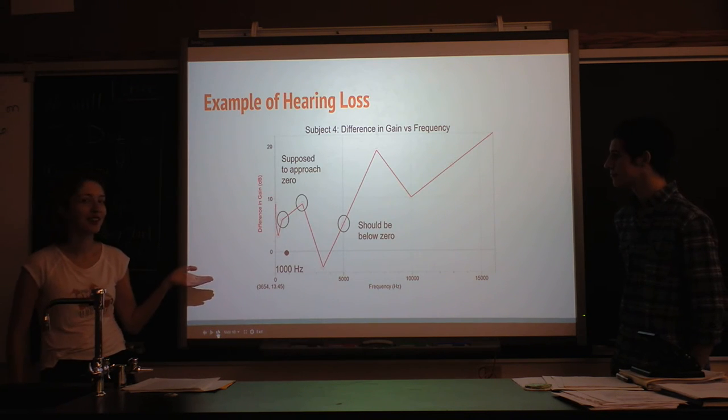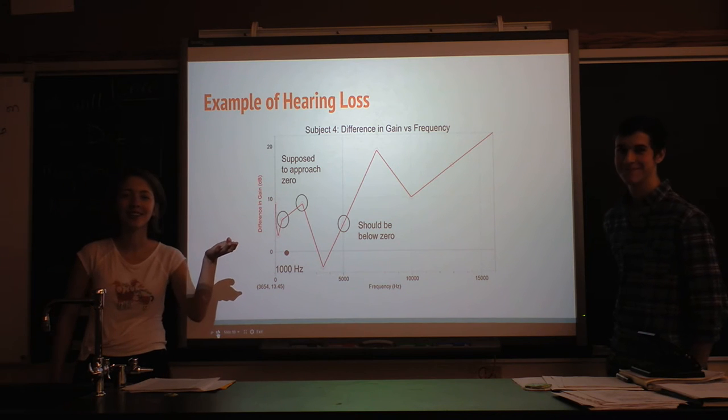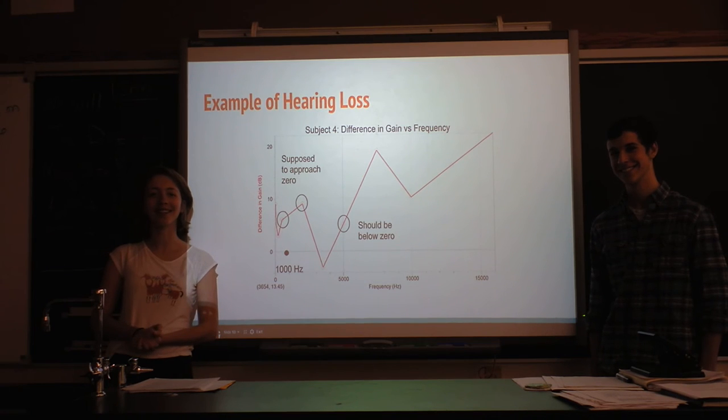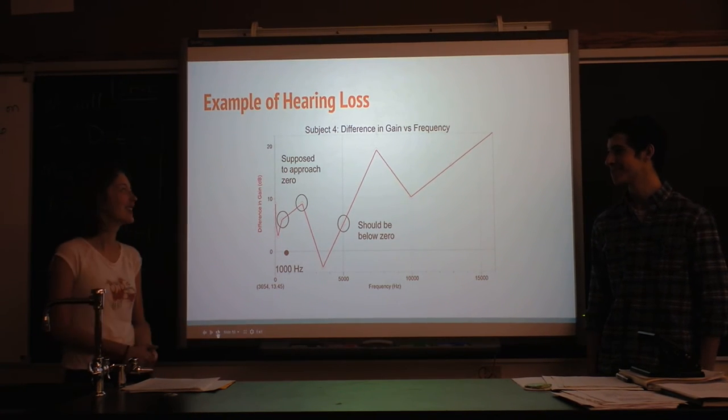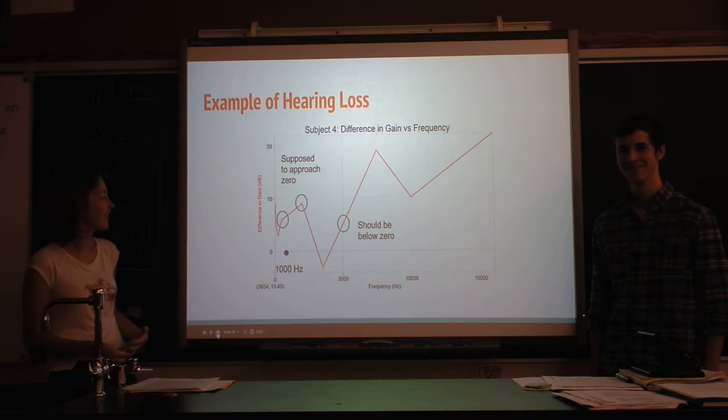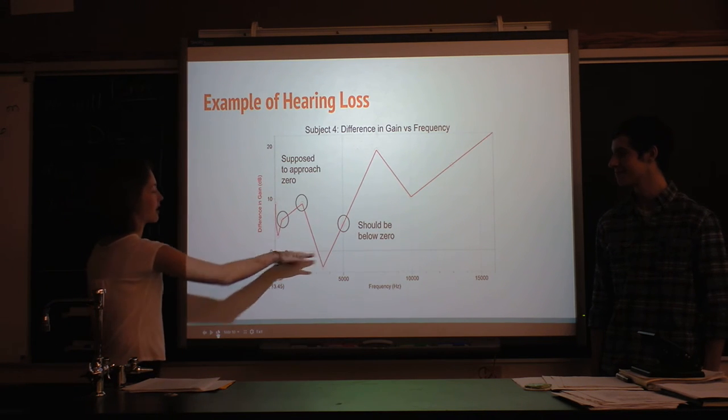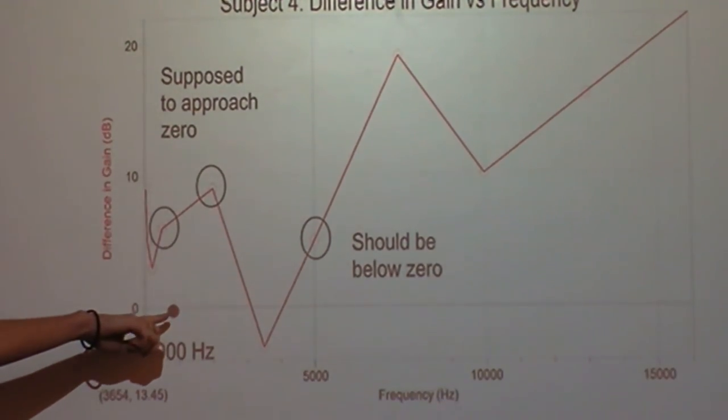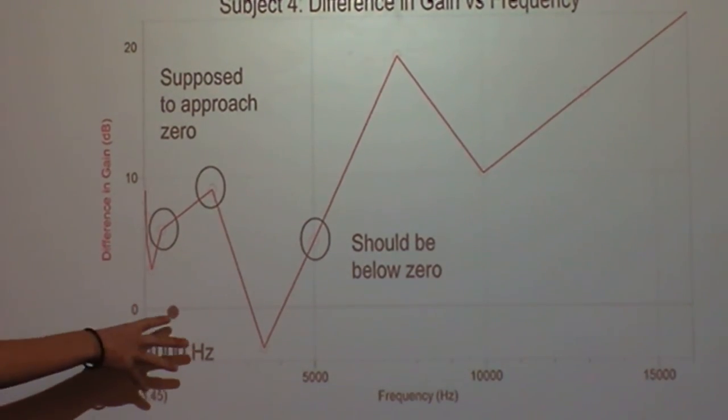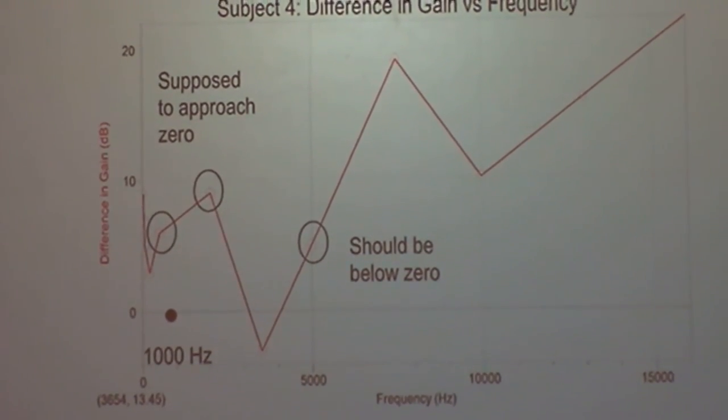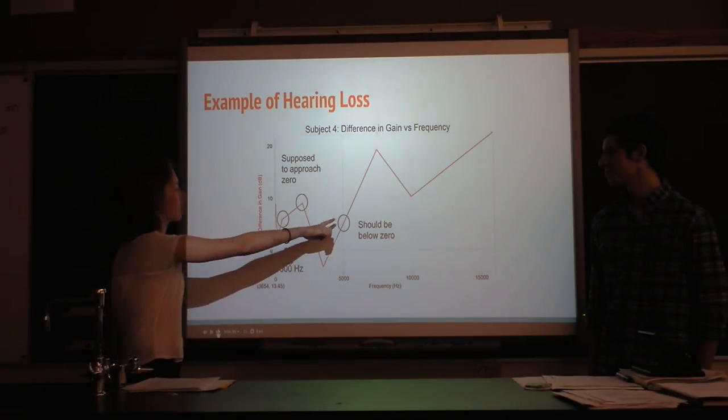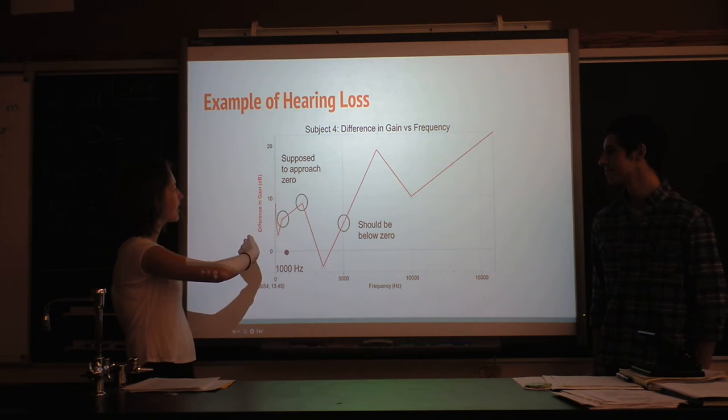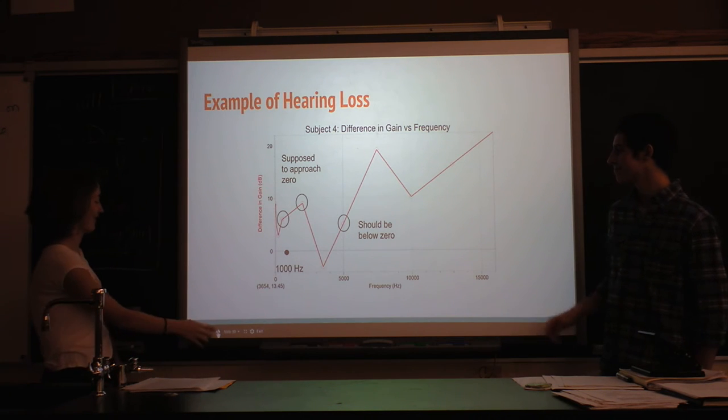This is an example of hearing loss. This is Sawyer. He has gotten his tubes removed multiple times, so he has a lot of scarring in his ears, which is probably why he has hearing loss. This is a line at 1000 hertz. We set 1000 hertz to zero for zero gain, and it should be zero here crossing because it goes down and then it goes back up.